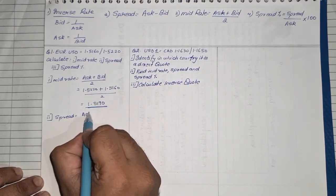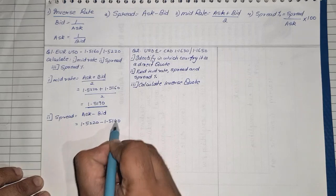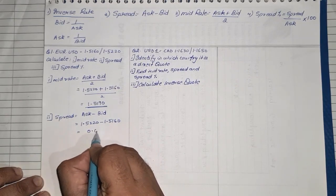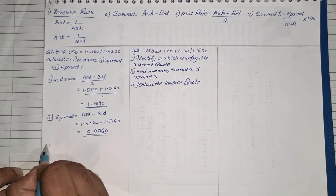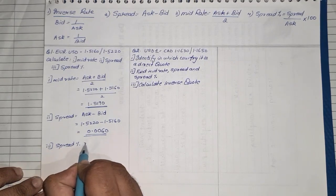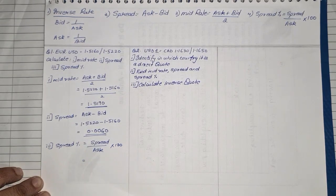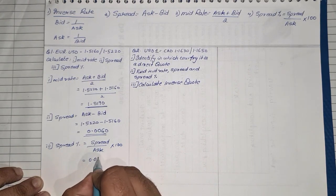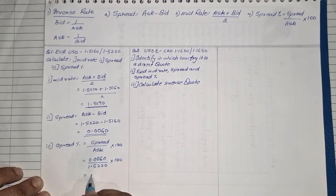Second, they are asking us to find the spread. The formula is ask rate minus bid rate: 1.5220 minus 1.5160 equals 0.0060. Third, spread percent, which is spread upon ask into 100: 0.0060 divided by 1.5220 into 100 gives a final answer of 0.39 percent.